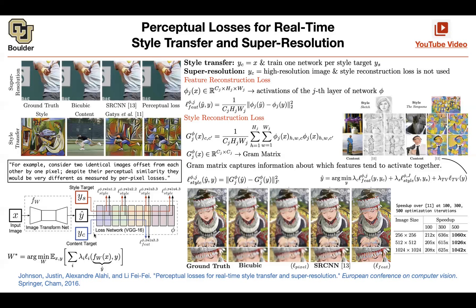That's why people started looking at other metrics. The idea here is really cool — you can actually use a pre-trained neural network like VGG16, which is pre-trained on ImageNet for classification. Throughout that training process it learns some high-level concepts about images. You can then use that neural network to give you your loss functions.